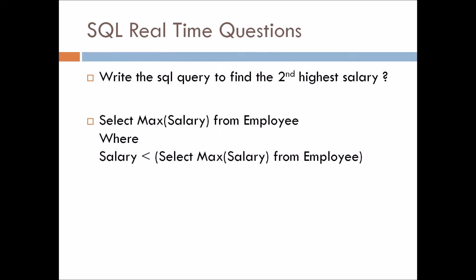For this we can write the query like this: SELECT MAX(salary) FROM employee WHERE salary is less than the inner query SELECT MAX(salary) FROM employees. As you all know, the inner query is executed first. So this inner query SELECT MAX(salary) FROM employees will give us the highest salary from the table — suppose it is 20,000. The filter condition salary less than 20,000 will give us the salaries which are less than 20,000, and the outer MAX will give you the second highest salary.